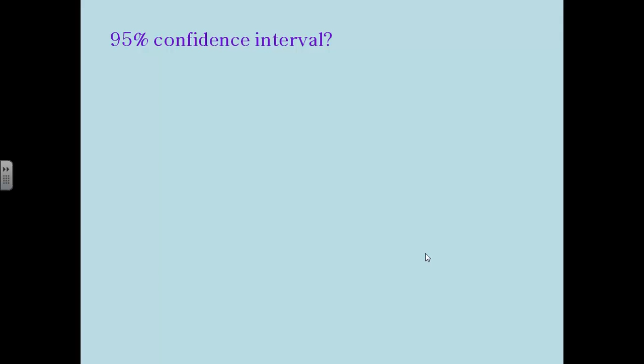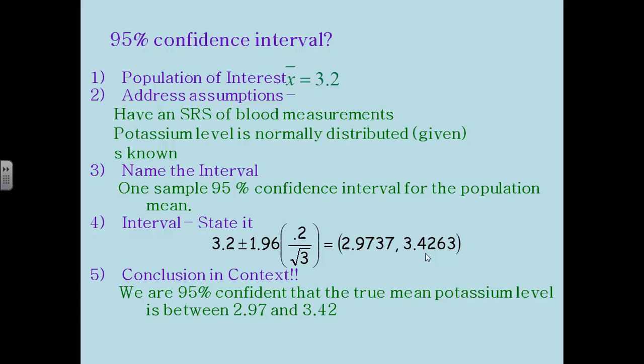What about with a 95 percent confidence interval? What would happen? Well with a 95 percent confidence interval everything else stays the same. What changes is the 1.96. At 95 percent we use a 1.96 and that makes our interval wider. So if we want to be more confident we need a wider interval.